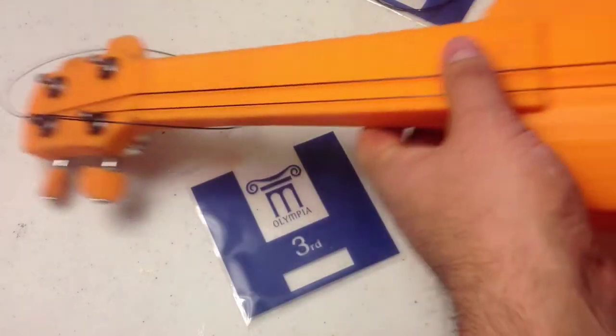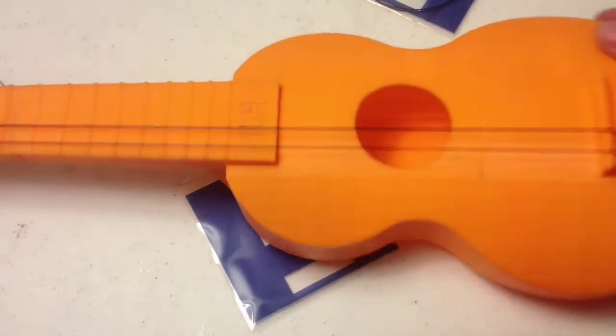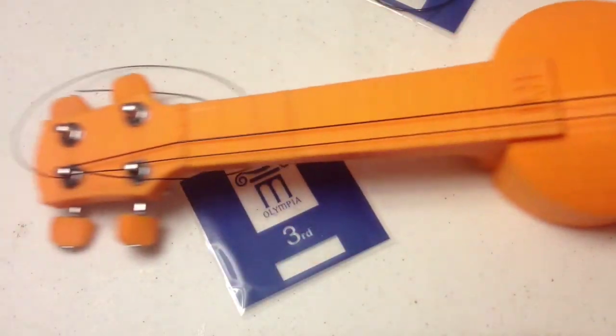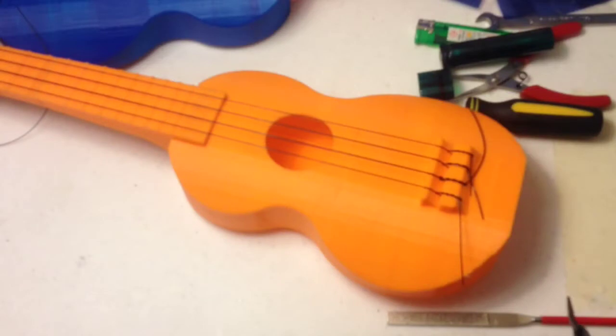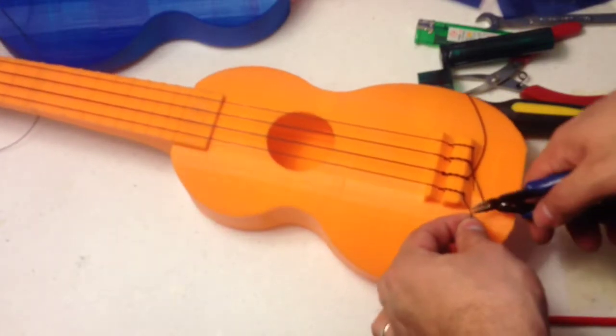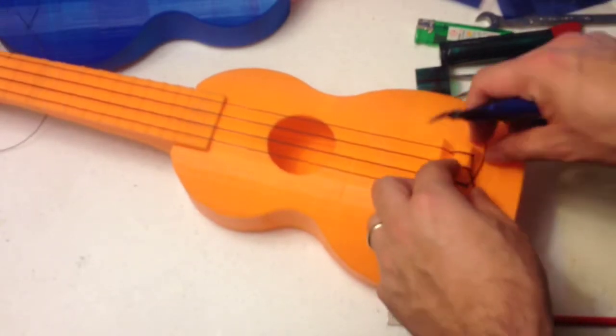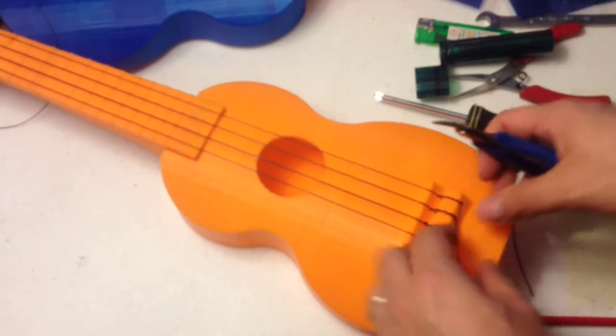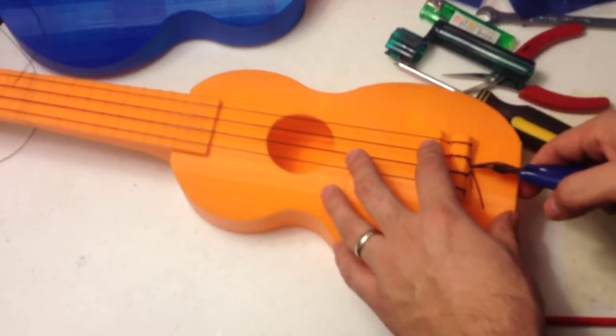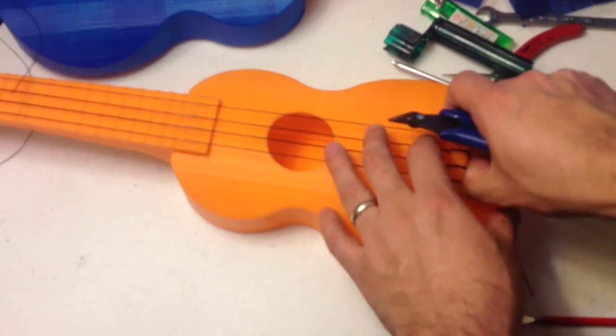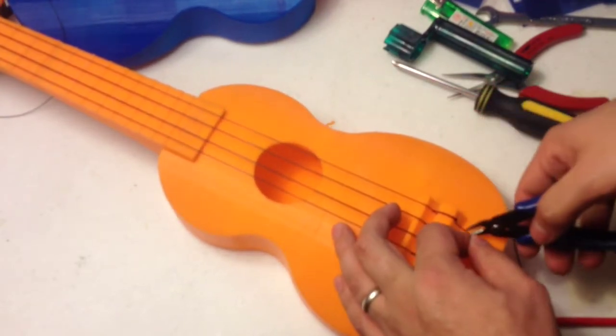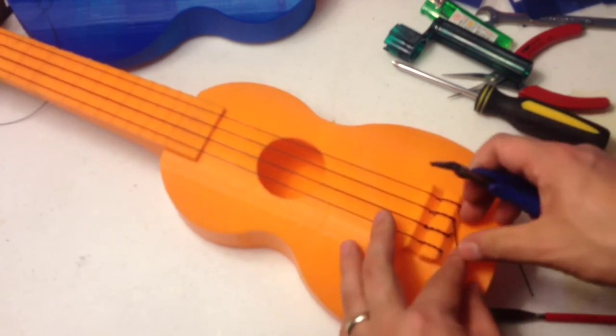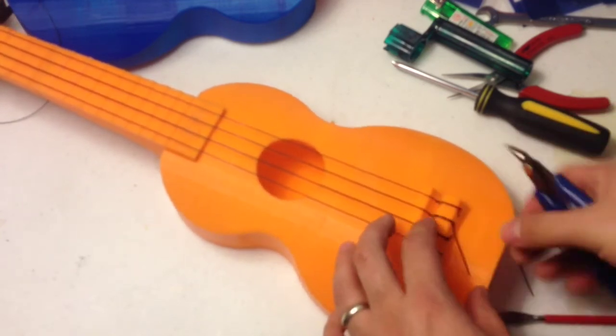And then you just repeat those steps for the remaining strings, the second and first string. Part of stringing your ukulele is to trim off the excess strings, so you can do that with any pair of pliers or wire cutters. You do it on both ends, so I'm starting on this end. You leave a little bit so the knot doesn't come undone, but you don't need to leave much.